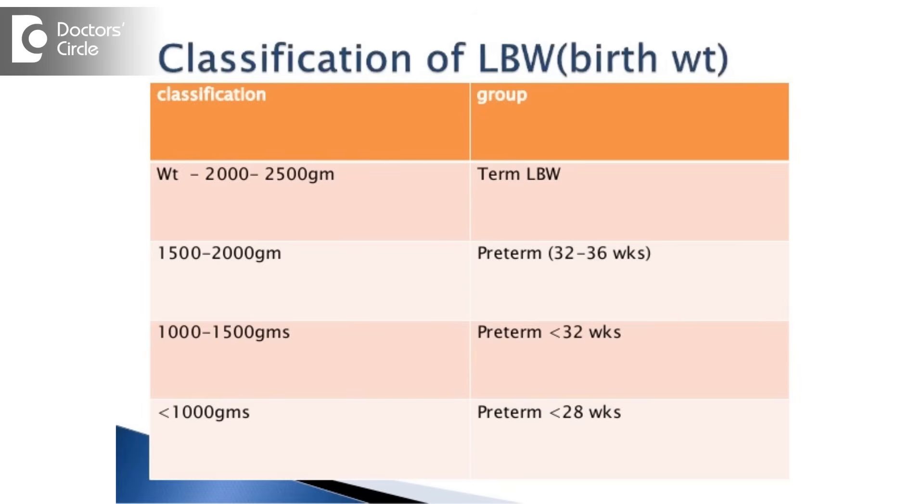Low birth weight babies are defined as live born weight of less than 2.5 kgs, or 5 pounds and 8 ounces, irrespective of the period of gestation. So any baby born less than 2.5 kgs is considered low birth weight.